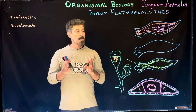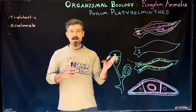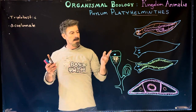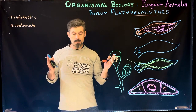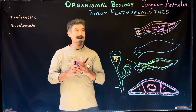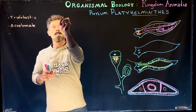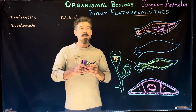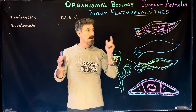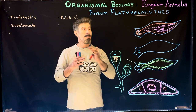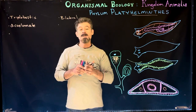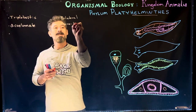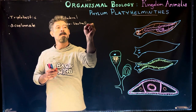Our next group is called the platyhelminthes. A helminth is a worm, and worms are a variety of different groups of organisms that have bilateral symmetry and are elongated — an anterior-posterior elongated organism. 'Platy' means flat, so these are the flatworms. This particular group is dorso-ventrally flattened.